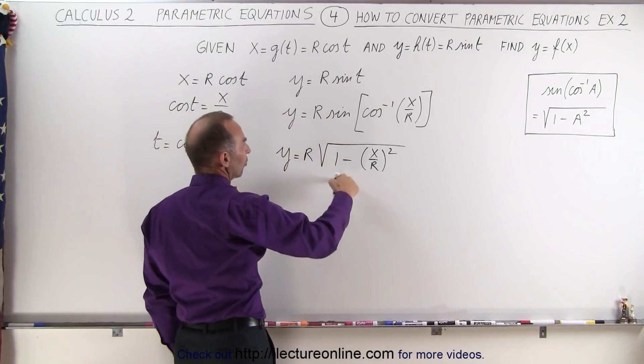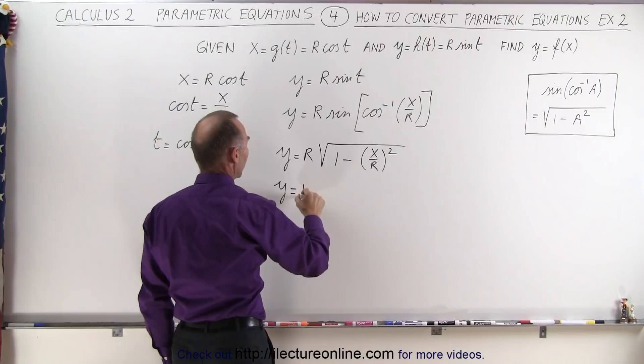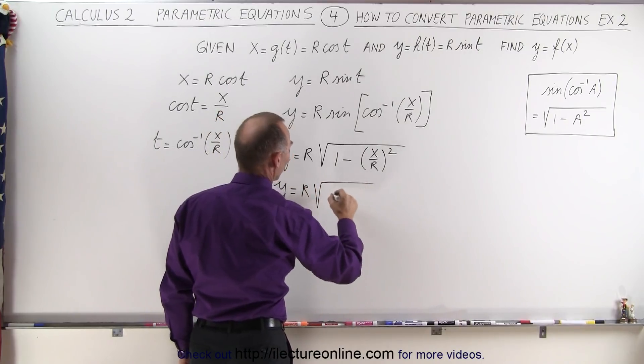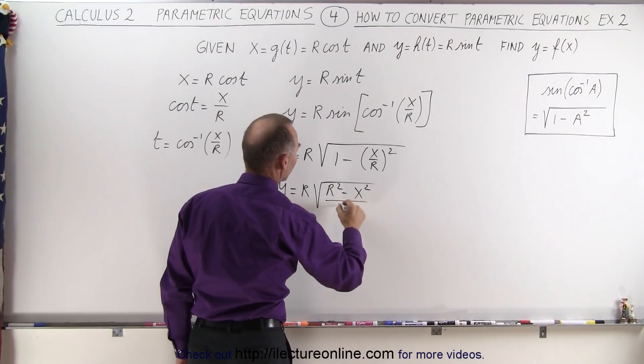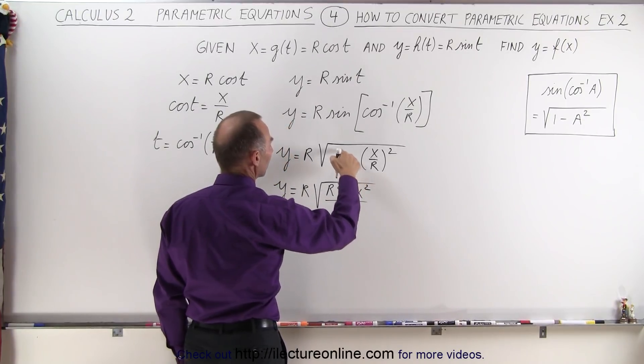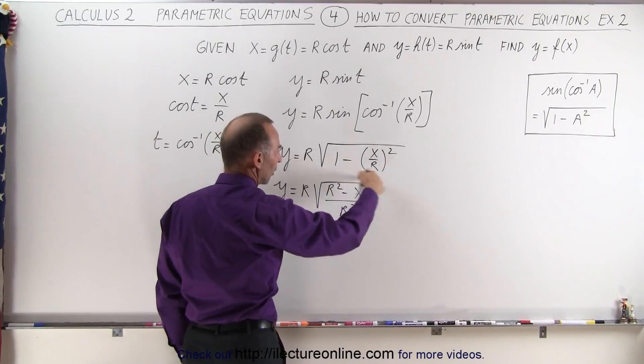So now we're going to solve for that. We're going to write this over a common denominator. So y is equal to r times the square root of r squared minus x squared over r squared. Here r squared over r squared is equal to 1. So 1 minus x over r squared is what we started with.